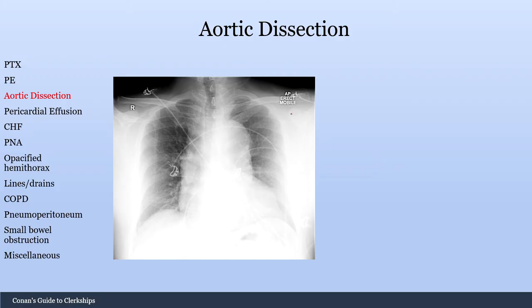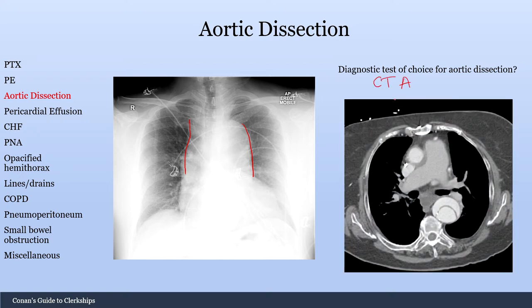Moving on to aortic dissection — the main thing you're looking for is a widened mediastinum. What is the diagnostic test of choice for aortic dissection? That would be the CT angiogram. Here's an example showing an aortic dissection with a true and false lumen — a double lumen appearance.